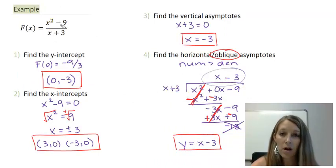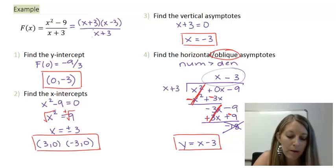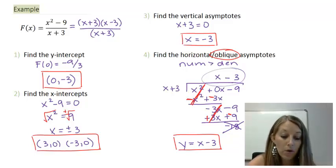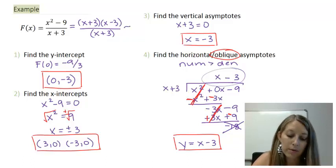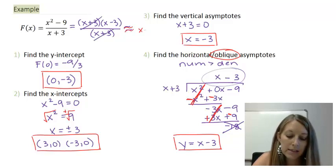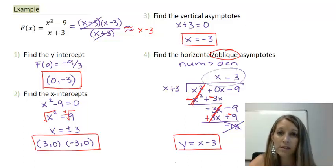This equation is in expanded form. Let's put it in factored form. The numerator is a difference of squares, so it factors into (x + 3)(x - 3), and the denominator is just (x + 3). Notice there's an (x + 3) in both numerator and denominator — they cancel out, approximately. So this is approximately x - 3, and I really no longer have a rational function; I now just have a polynomial. So some of the information we found will stay the same and some will disappear.